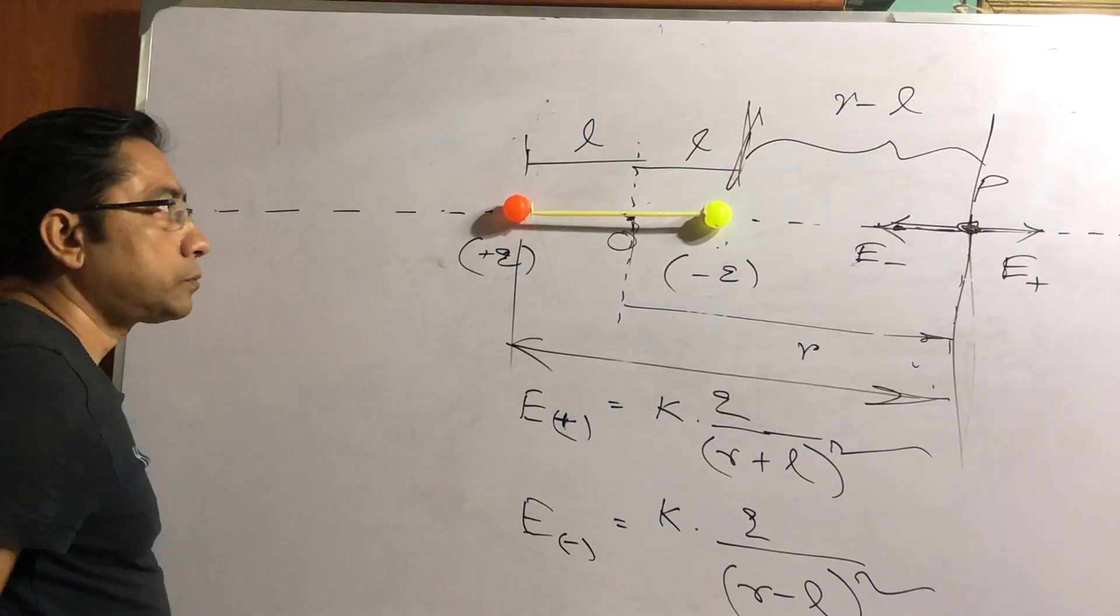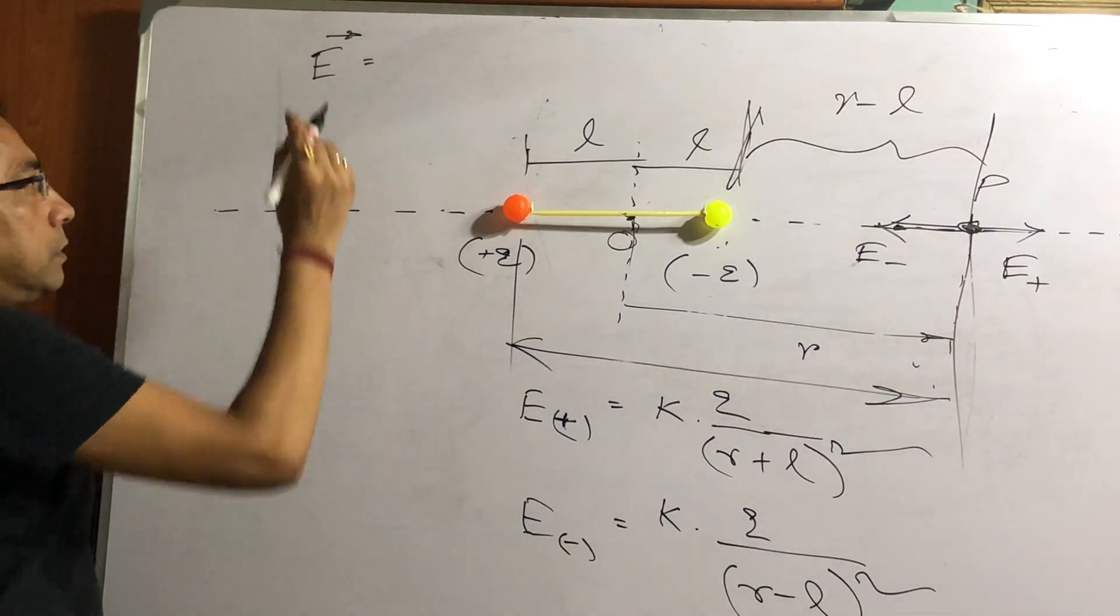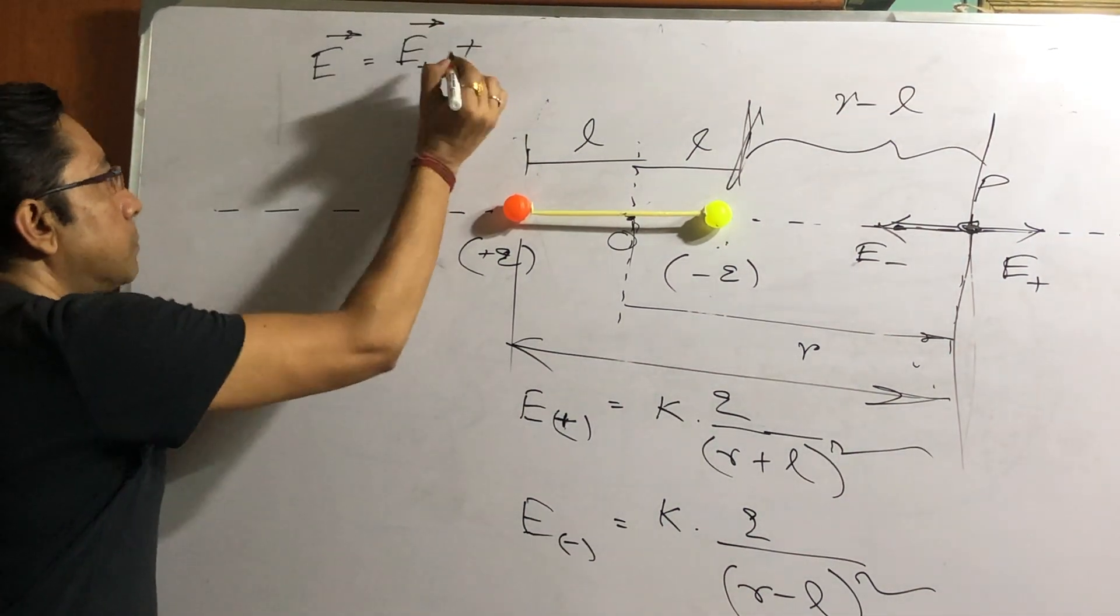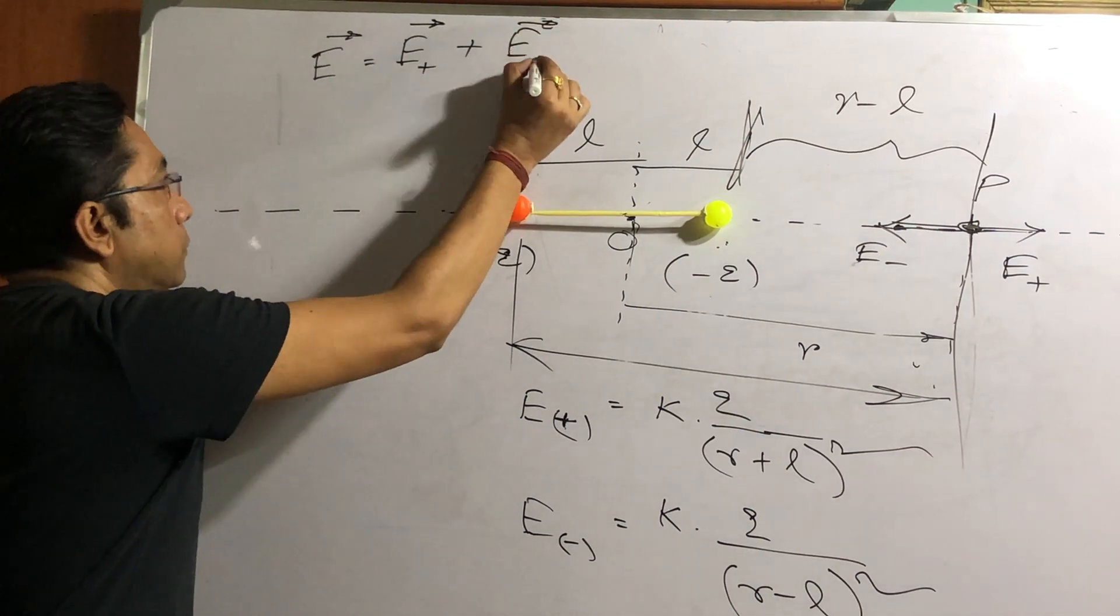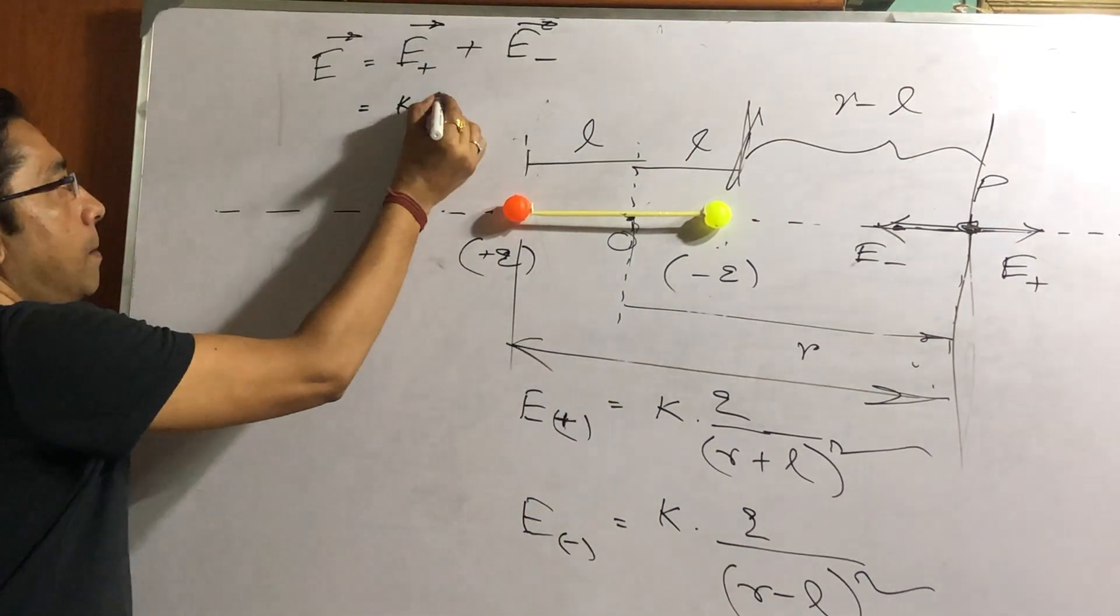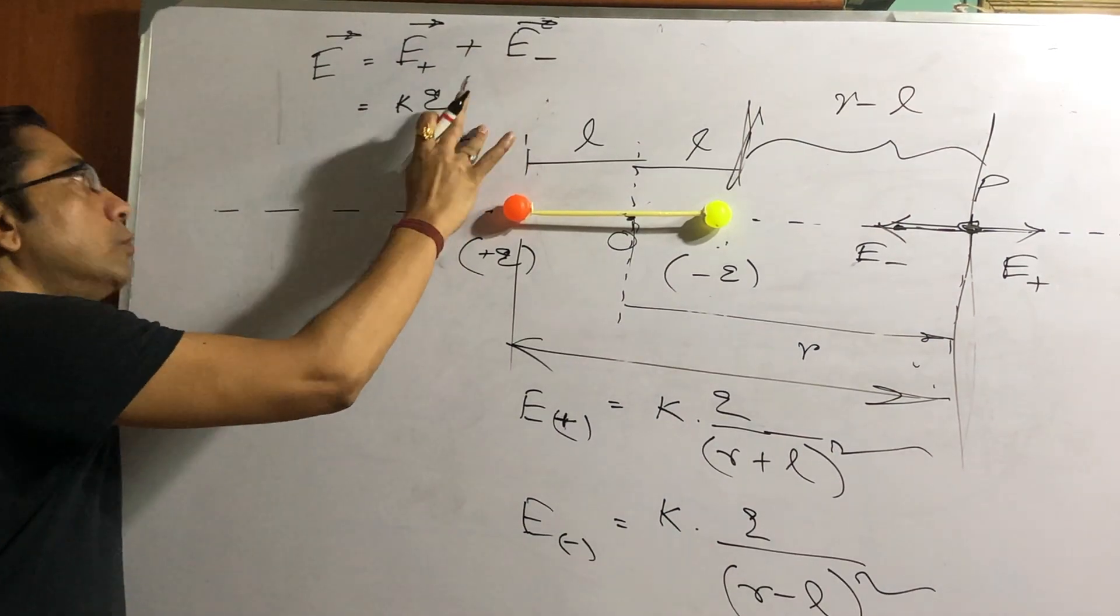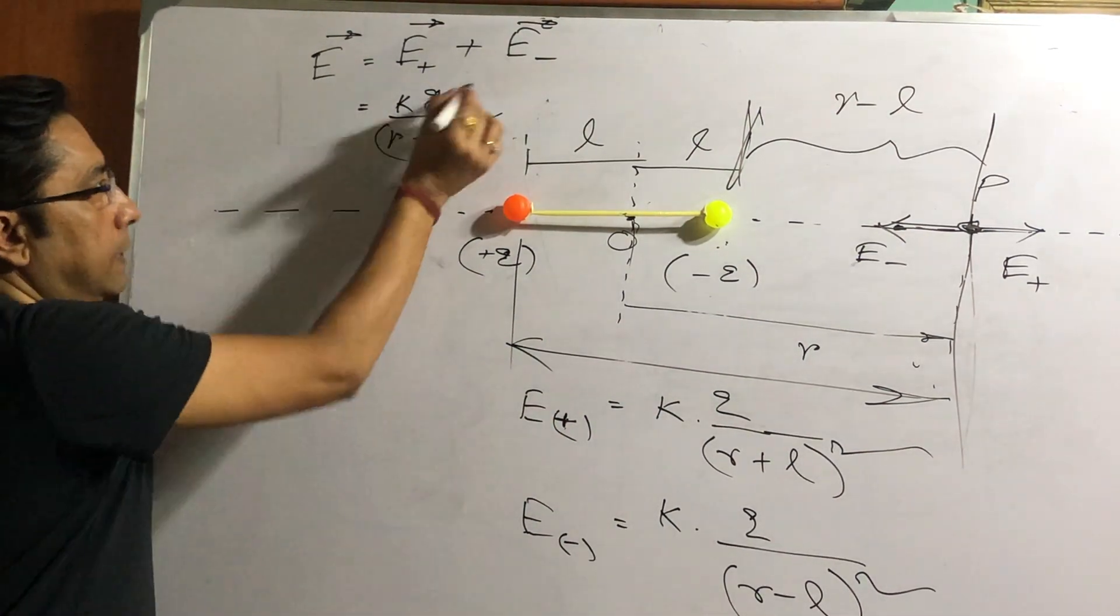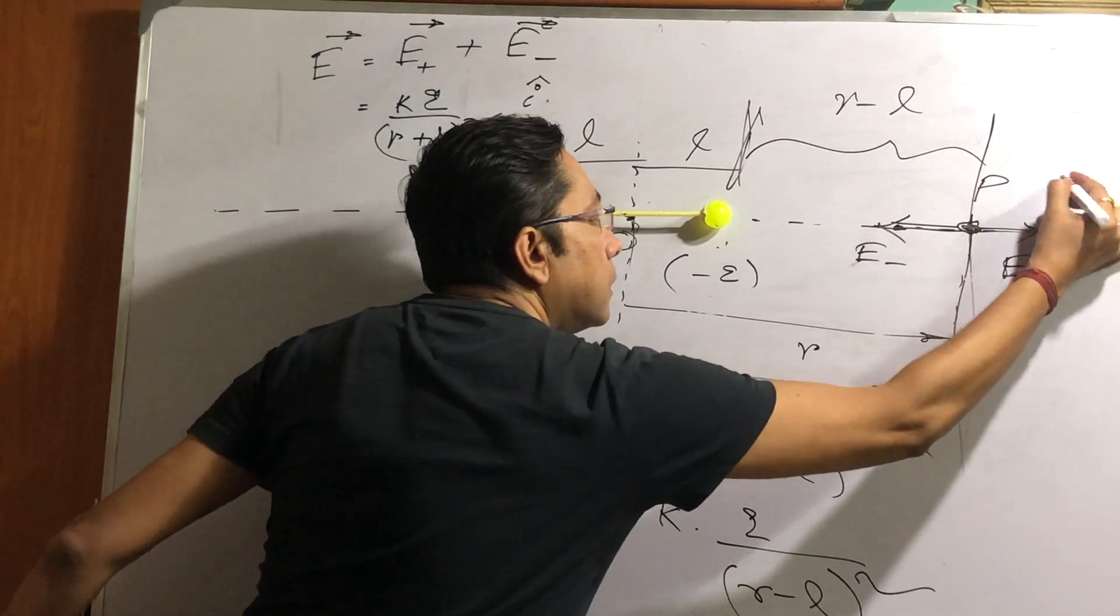We can do it in a vector, following a vector method. Like net electric field E vector. Try to follow this, very easy. E vector can be given by the vector sum. Remember superposition of electric fields. Vector sum of electric field due to plus charge and minus charge equals to. May we write this like this: K, Q. Let me do it in a little detail. K Q by (R plus L) whole square, then i hat.